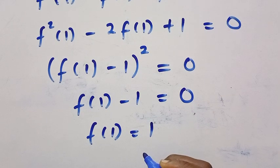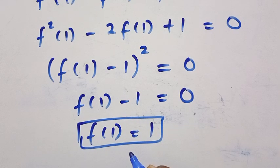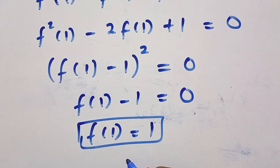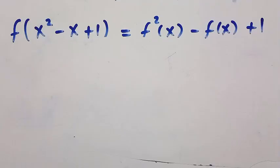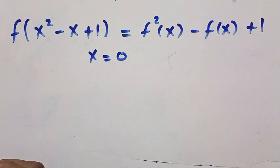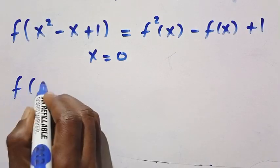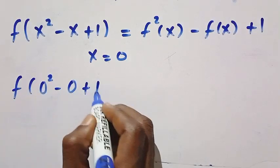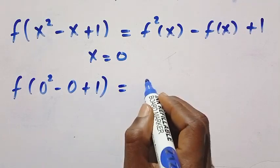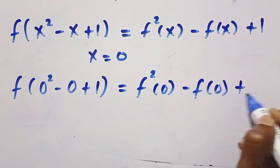We also have to find f of 0. So we let x equal 0. We change every single x to 0, and we have f of 0 squared minus 0 plus 1 equals f squared of 0 minus f of 0 plus 1.